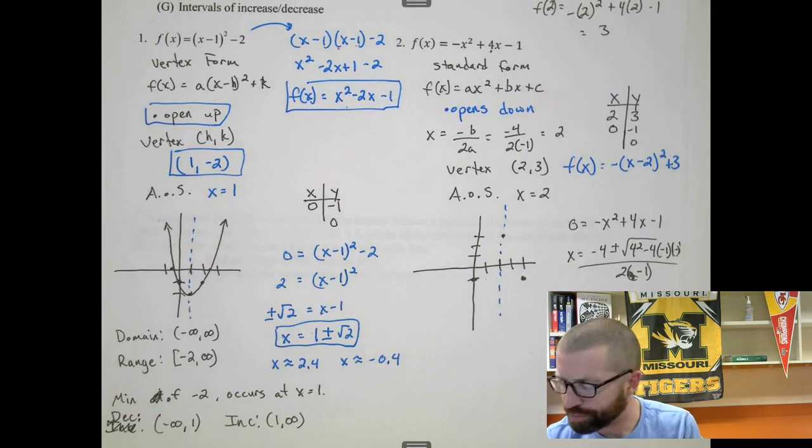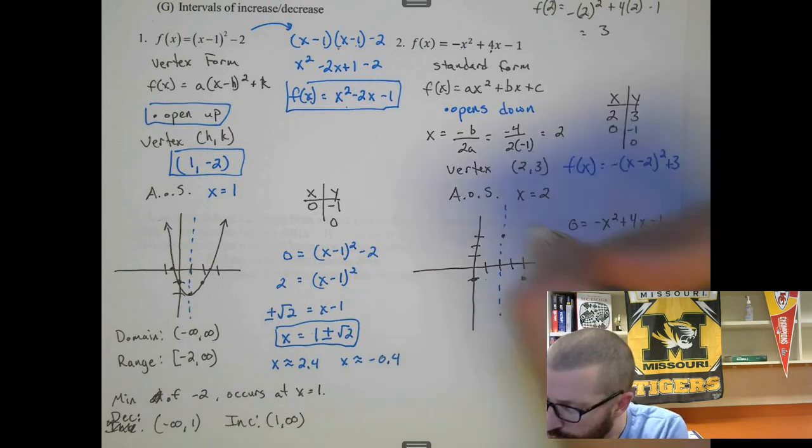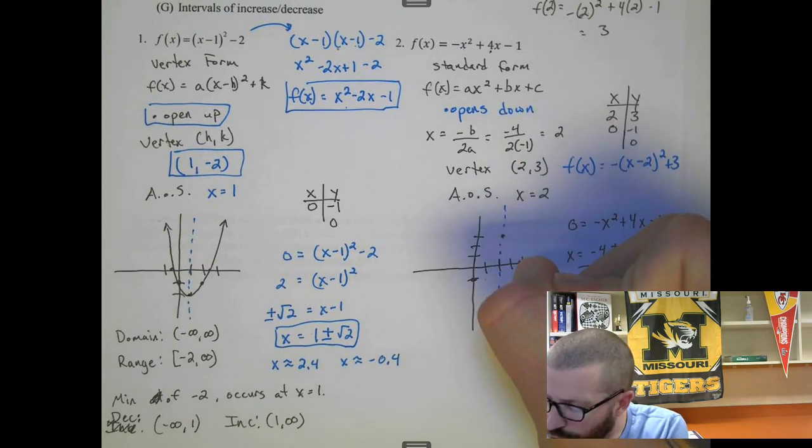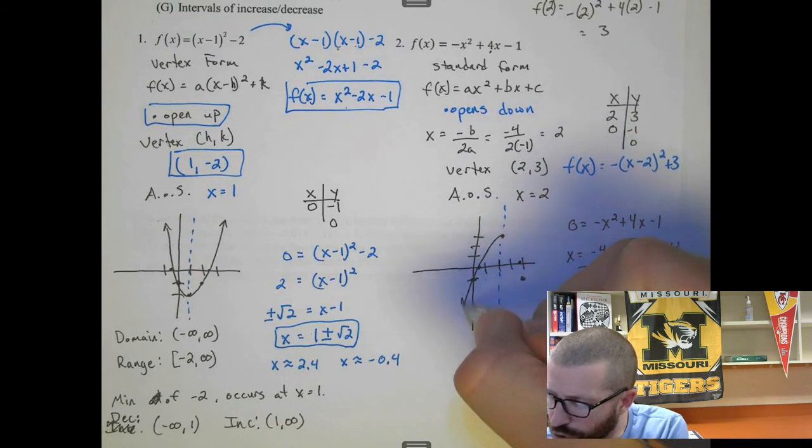And we won't worry about putting that on the graph. I guess we could just figure out what side it's on. So 2 + √3 is 3.7, so it'd be pretty close to there and pretty close to here using your axis of symmetry.